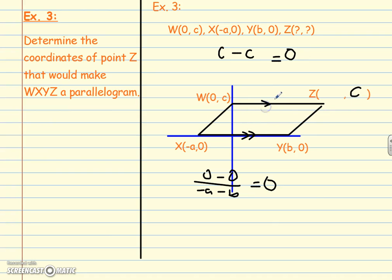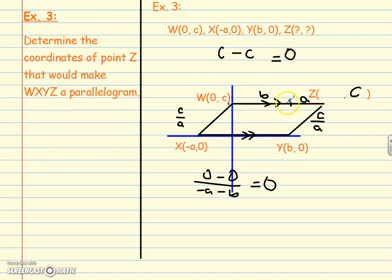Now for the x-coordinate of Z: the slope of WZ going from W at (0, c) is c/a — up c, over a. We've already gone up c, so we need to go over a from W. The distance from the origin to Y is b, and from W we need to go a further, so the x-coordinate of Z is b + a. You can also verify this using congruent opposite sides: WX has length a, so adding that to b gives a + b. Either way — a + b or b + a — it's commutative. So Z is at (a + b, c).